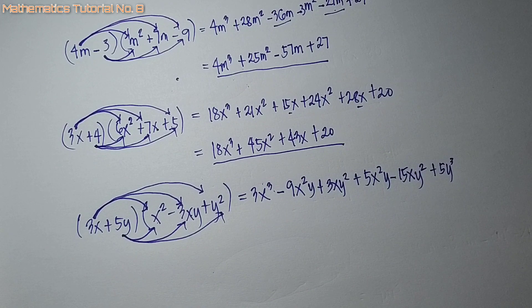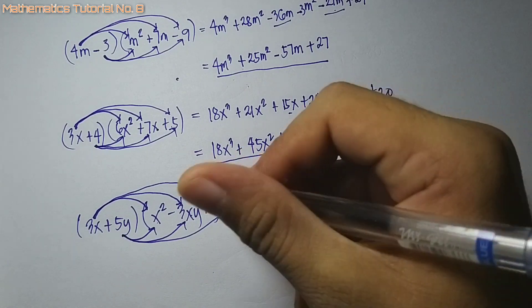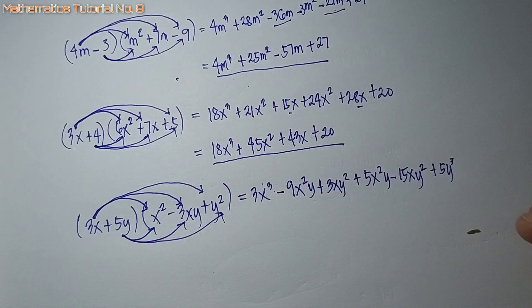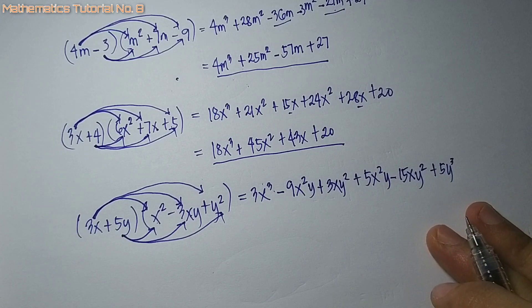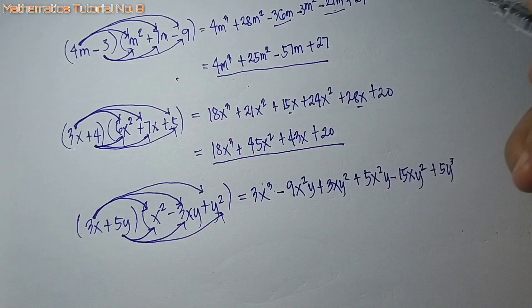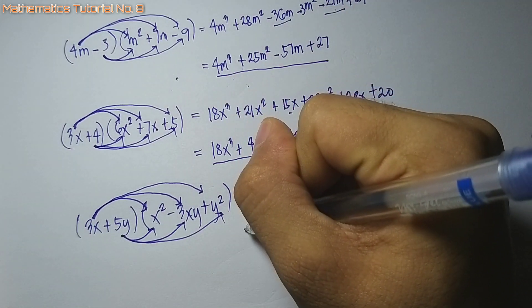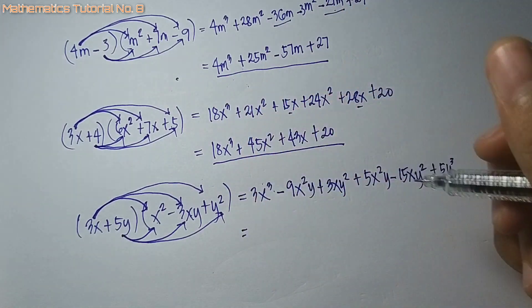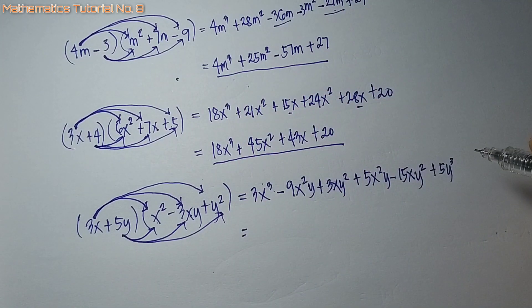Sa last, 5y times y squared — that is positive 5y cubed: 1 plus 2 that is 3. So 5y cubed. Karoon, i-add na ang similar o terms — tanawon kung nay similar na terms.